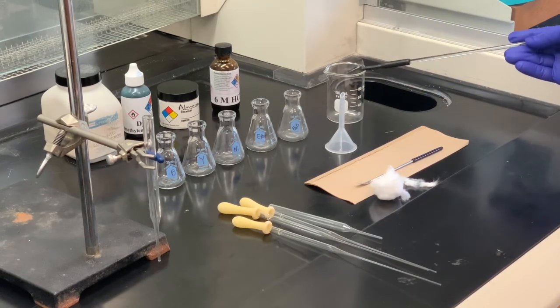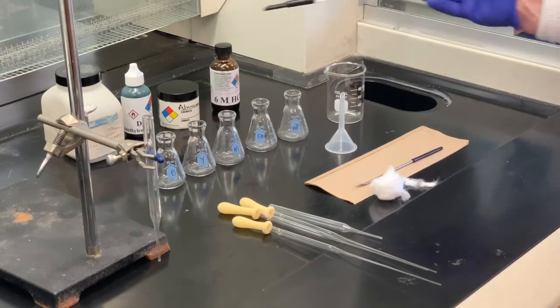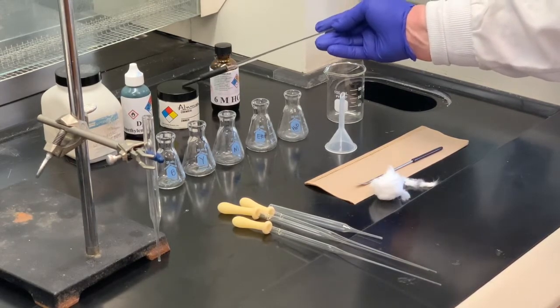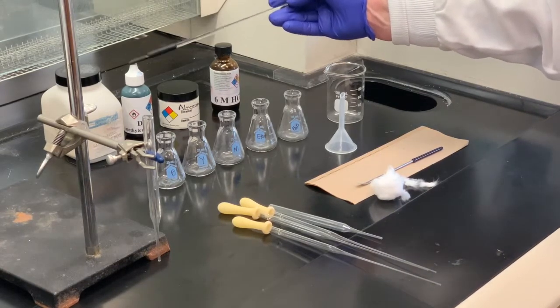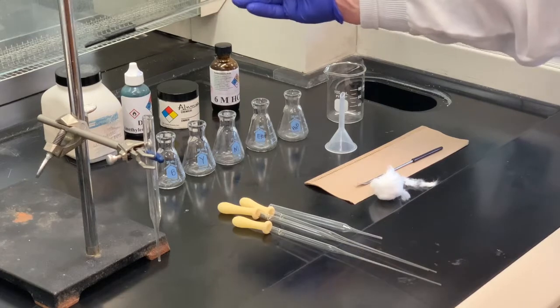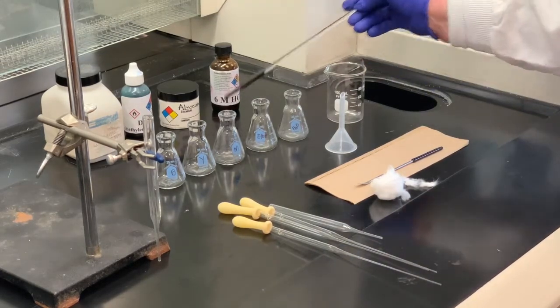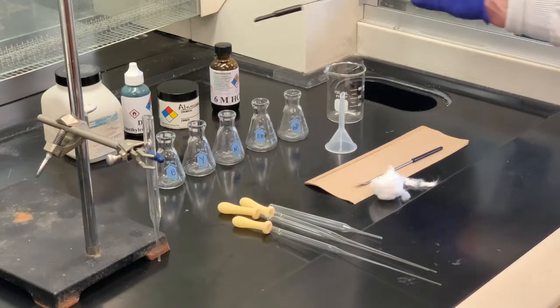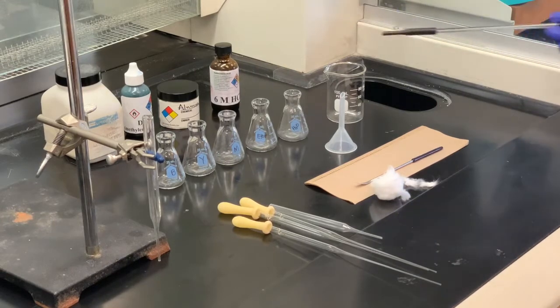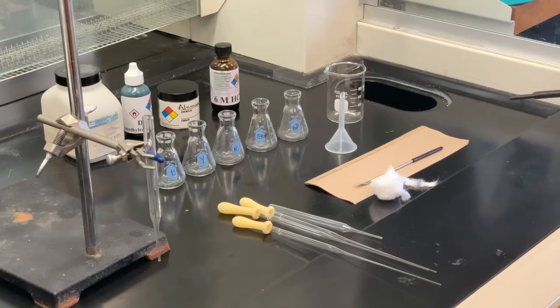We need a small funnel so we can transfer material without spilling it into our column. I need a beaker to make a slurry of our stationary phase, which is going to be the aluminum. So the aluminum is going to be our stationary phase. This is our dye mixture. It has both the yellow and the blue combined. And then this is sand that we'll need. And if we run into a little bit of trouble with the flow of the material inside the column, we may have to add a drop of hydrochloric acid to increase the flow rate.